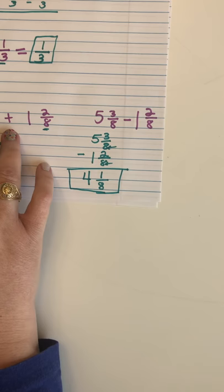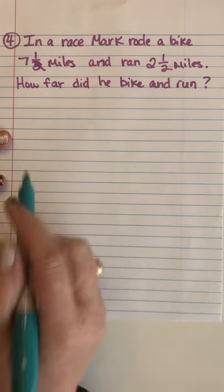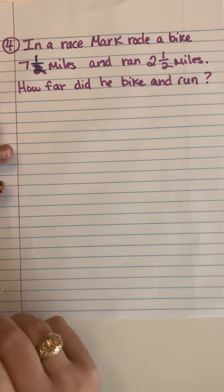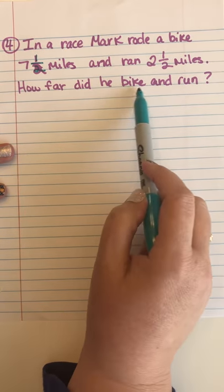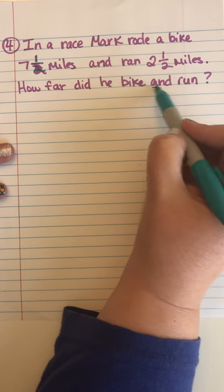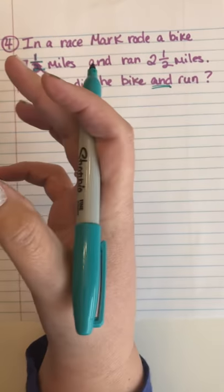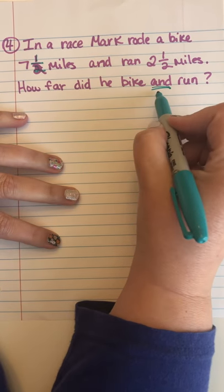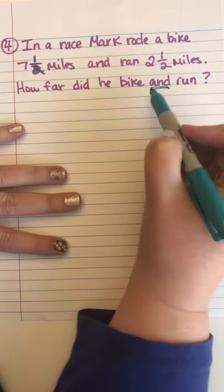Let's look at a word problem. In a race, Mark rode a bike seven and one half miles and ran two and a half miles. How far did he bike and run? The word 'and' tells us we're combining two things — how far he biked and how far he ran — so we're going to be adding those two pieces together.